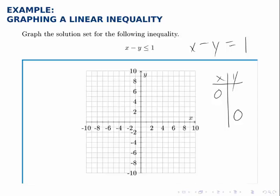If x is 0 here, we have negative y equals 1, in which case y must equal negative 1. If y is 0, we have x minus 0, or just x equals 1, so we know that x is 1. That's a simple illustration of how graphing using the intercepts can make lots of problems quite easy.